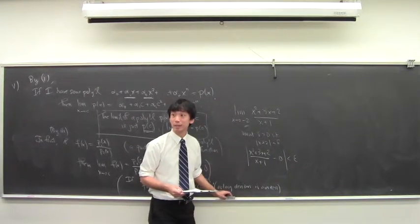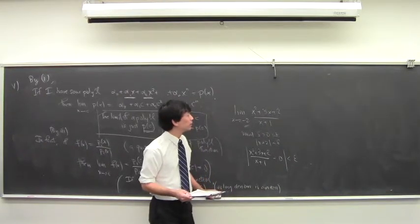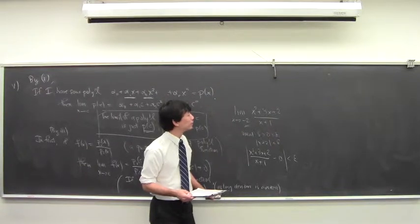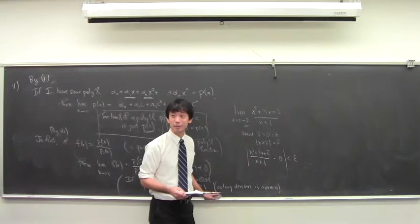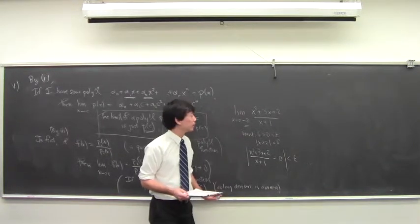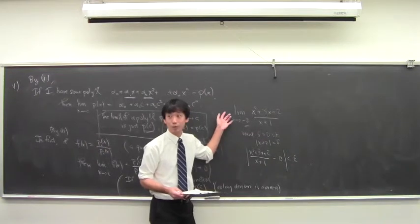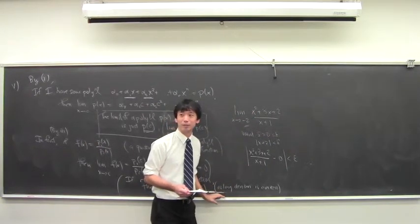Student question: if the limit was x approaching negative 1, couldn't you just cancel out the bottom? If you factor the top polynomial, it's (x plus 1)(x plus 2), so you could cancel. There would be a hole at negative 1, but it would still have a limit. Yes, exactly — the function would have a hole, but it would still have a limit.